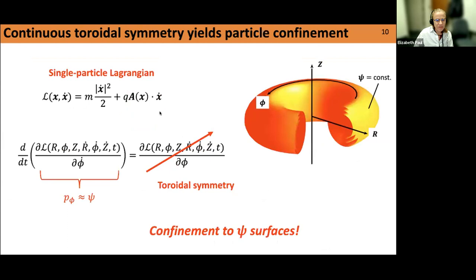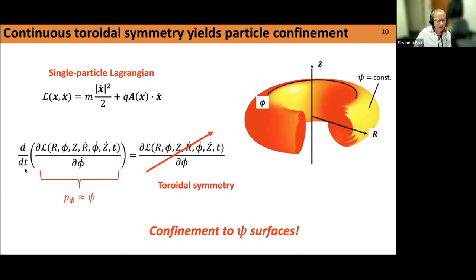There's another benefit of axisymmetry that we lose as we go toward stellarators. From the single particle Lagrangian picture, if the Lagrangian is independent of the toroidal angle phi — through axisymmetry — we get a corresponding conserved momentum p-phi. You can show that with a sufficiently strong magnetic field, p-phi is approximately constant on magnetic surfaces. This tells us that in a purely axisymmetric magnetic field, we automatically get confinement of charged particles — they're essentially stuck to magnetic surfaces.